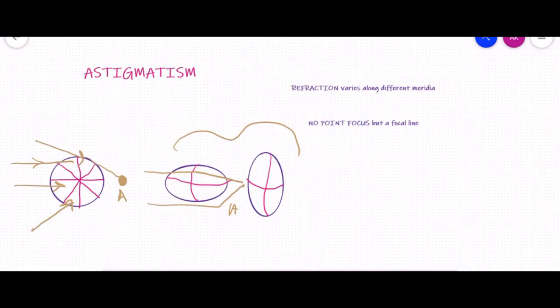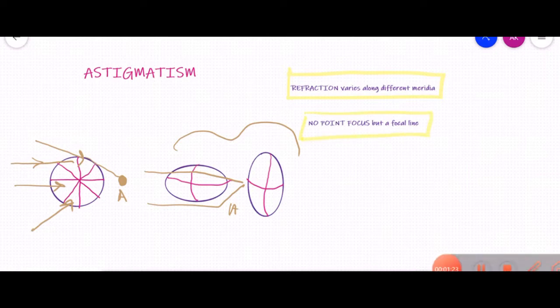So what is astigmatism? Astigmatism is a type of refractive error in which the refraction will vary along different meridians, because different meridians will have different refractive power. Because of that, we will not have a point focus but instead we will have a focal line.